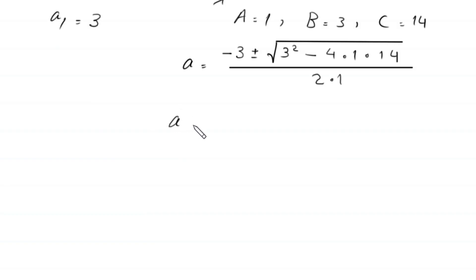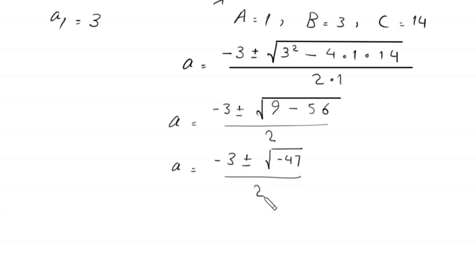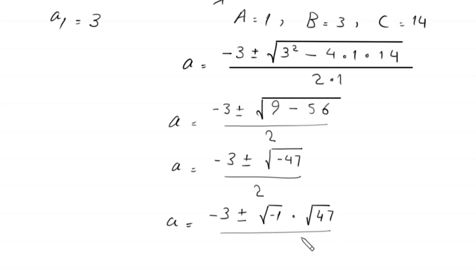Next, a equals negative 3 plus or minus square root of 9 minus 56 divided by 2. This gives a equals negative 3 plus or minus square root of negative 47 divided by 2. The square root of negative 47 can be written as square root of negative 1 times square root of 47, divided by 2.